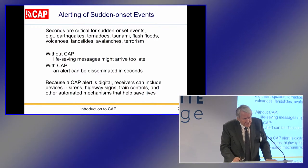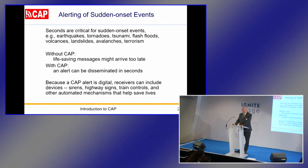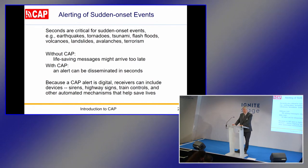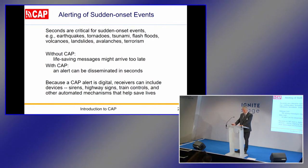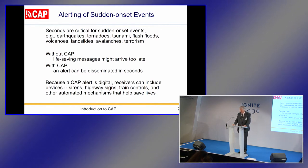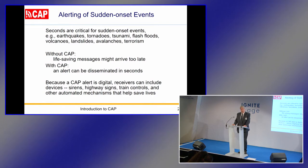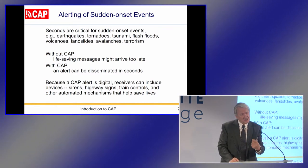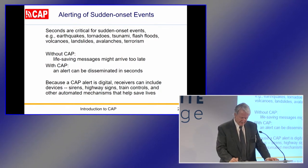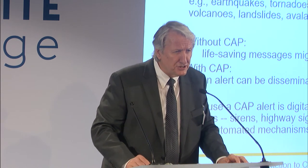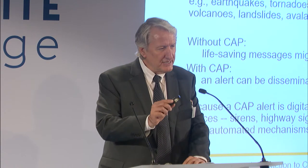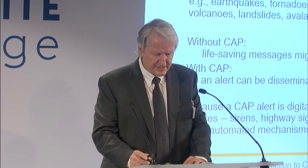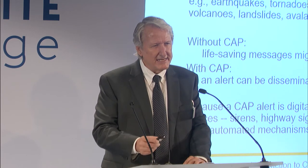Some types of hazard occur so suddenly that seconds can mean the difference between timely, life-saving alerts and alerts that arrived too late. Examples: earthquakes, tornadoes, tsunami, flash floods, volcanoes, landslides, avalanche, terrorism. CAP alerts can be posted immediately through an online facility and that immediately disseminates through many media, some of which arrive within a second or two. Also, CAP messages are digital, and that means the action is not only by people — that action can be by devices: sirens, highway signs, train controls — all these automated mechanisms that help save lives.